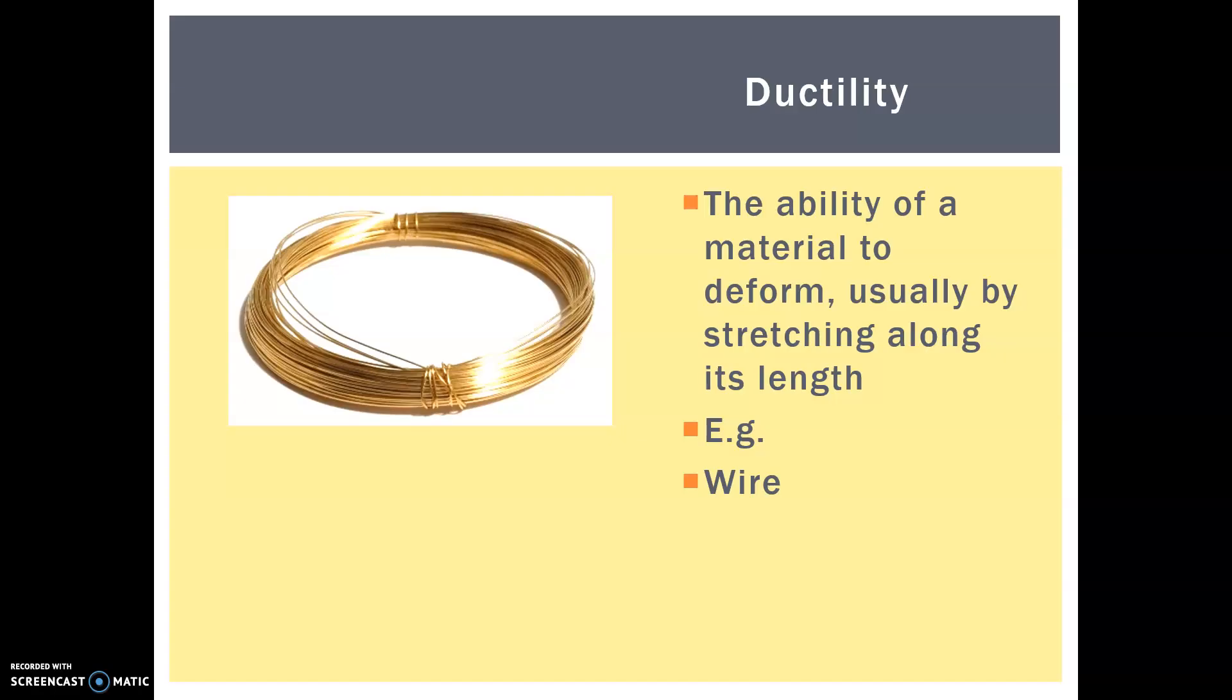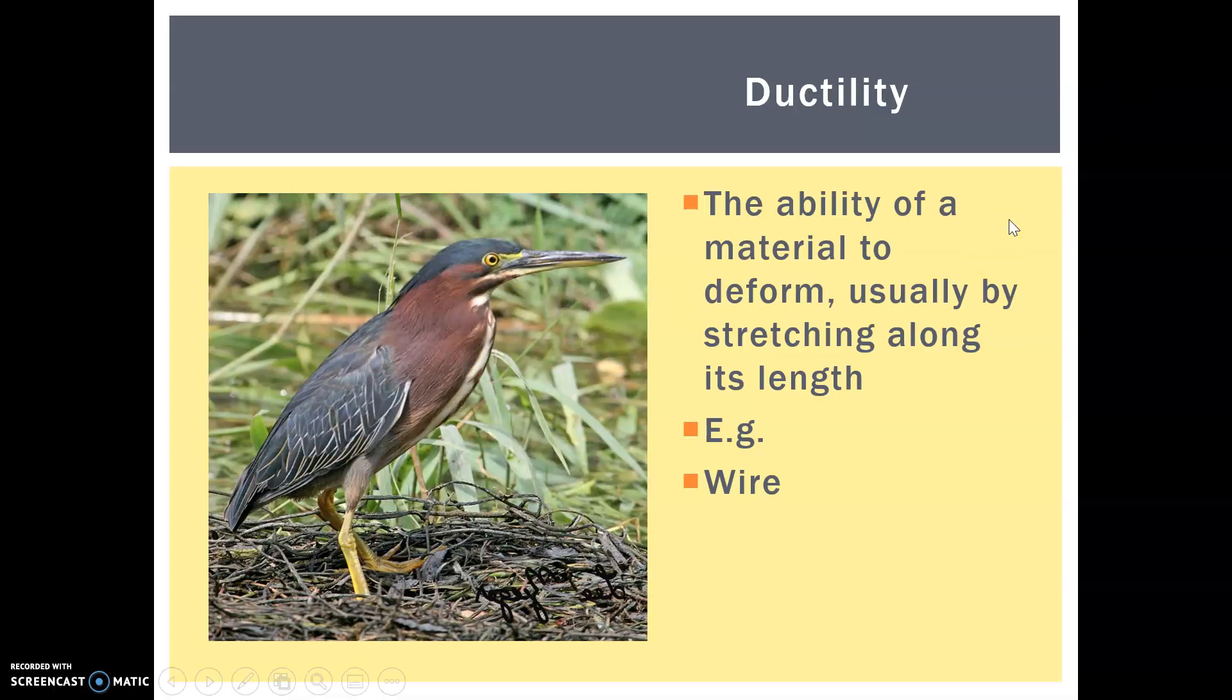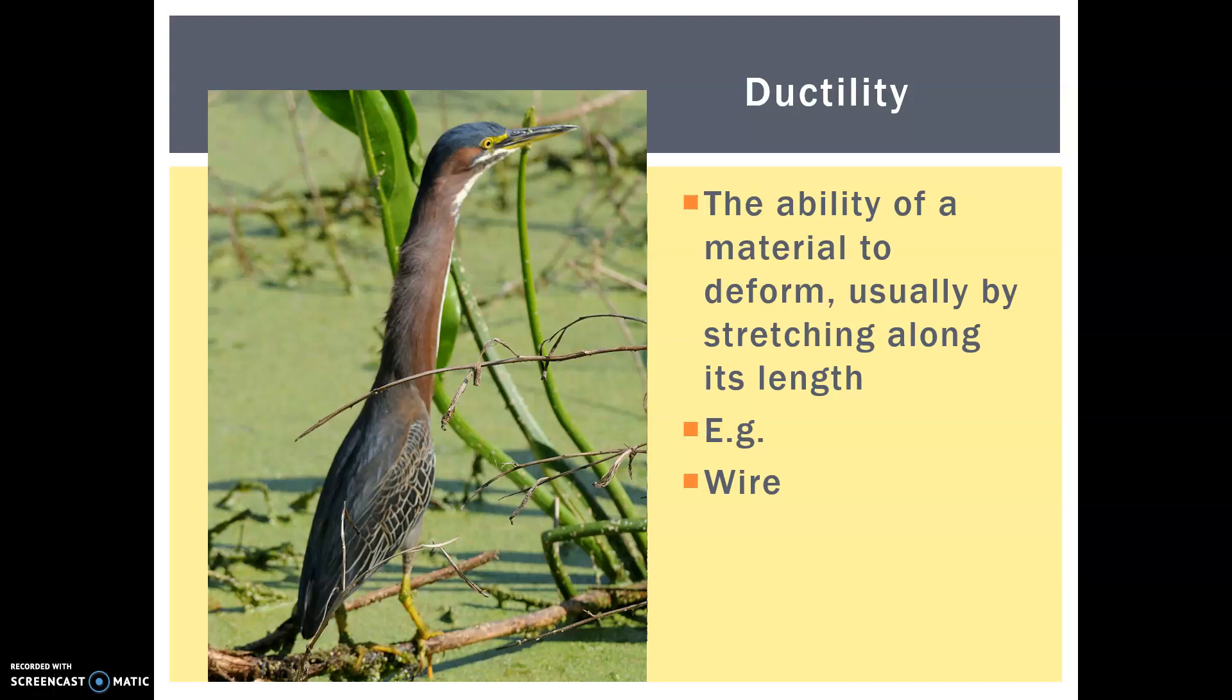So I have this fun little way to help you remember what ductile means. So here is a special kind of duck, really it's a heron, but let's pretend it's a duck. So here is our duck, and this little duck, when he's looking out for prey or for predators, has a special little ability where he gets very, very long, just like this one.